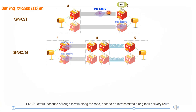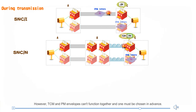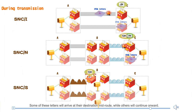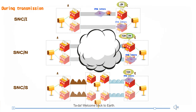SNCN letters, because of rough terrain along the road, need to be retransmitted along their delivery routes. During delivery, TCM and PM envelopes watch for problems and initiate a backup plan if any are found. However, TCM and PM envelopes cannot function together — one must be chosen in advance. PM envelopes provide end-to-end error testing while TCM envelopes provide segment-based testing. SNCS handles letters destined for different destinations from one starting location. Some of these letters will arrive at their destination mid-route while others will continue onward. During delivery, the TCM envelopes watch for problems and initiate a backup plan if any are found.